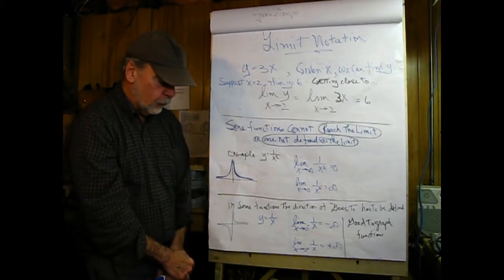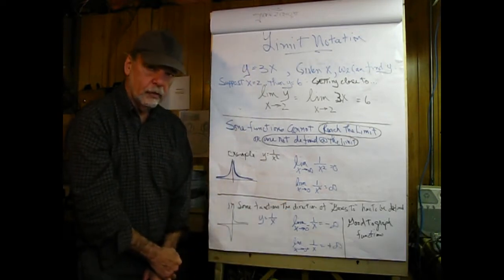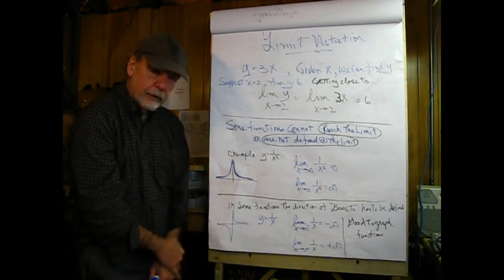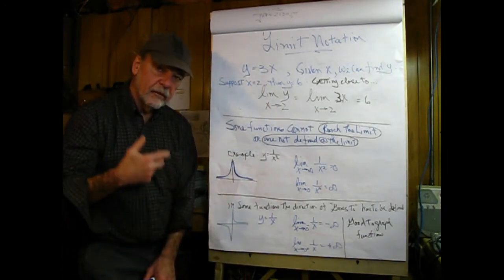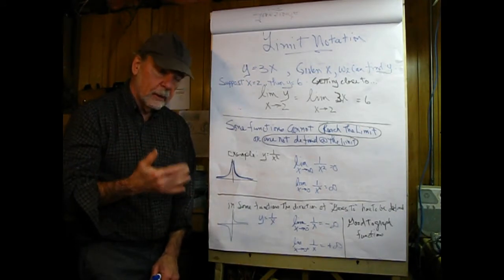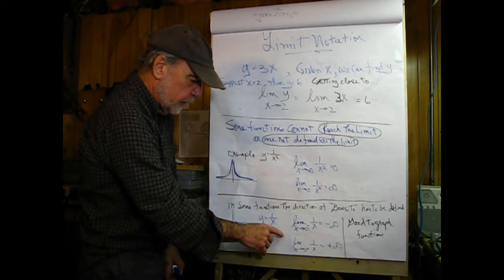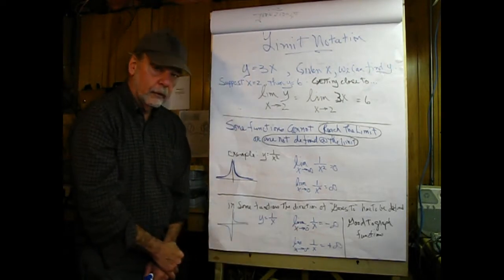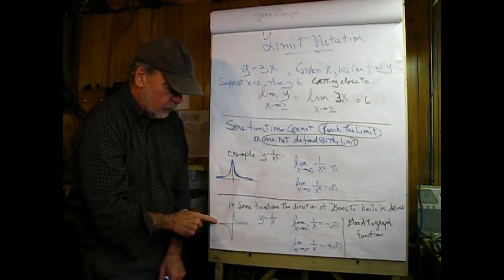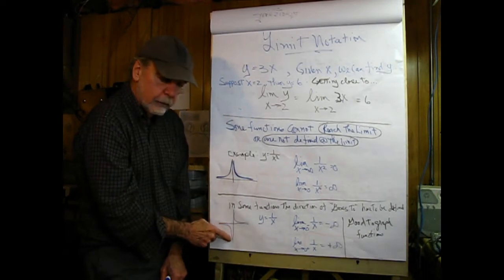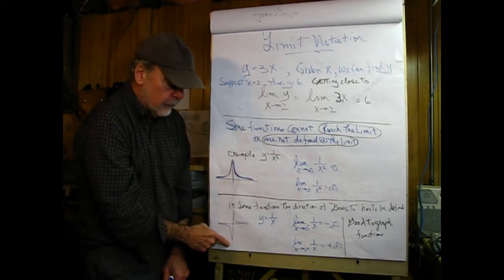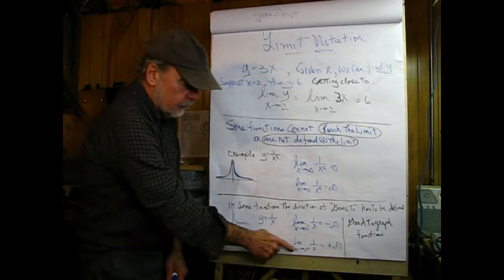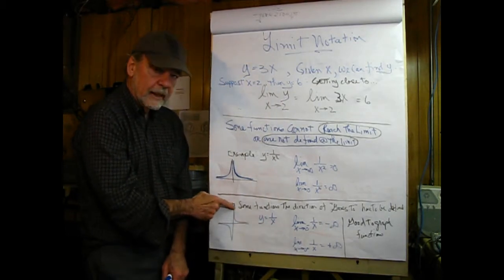For example, what's the limit as x goes to 0? Well, x going to 0 can be either positive or negative infinity, so I have to state which direction. Coming in from the left side — moving to the right — I would say x goes to 0 with a little negative sign above it, and that trace shows the limit would approach negative infinity. Contrarily, approaching 0 from the right side, x equals 0 plus, gives positive infinity.